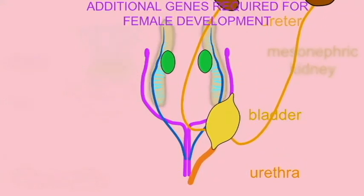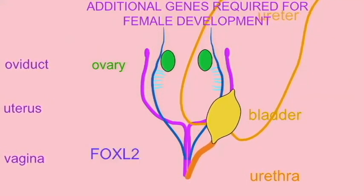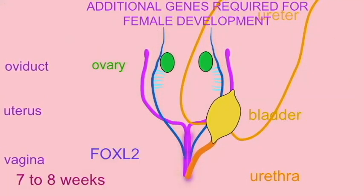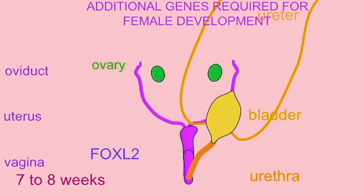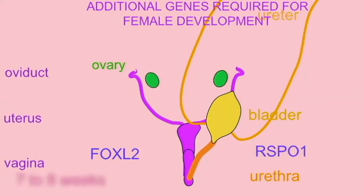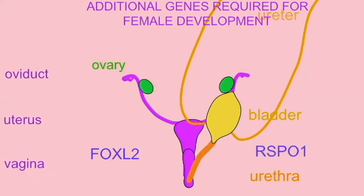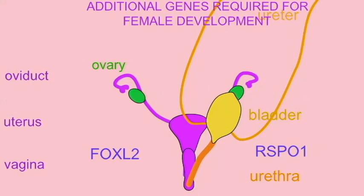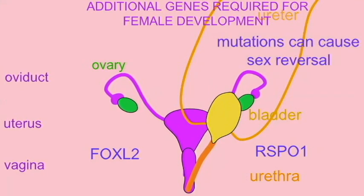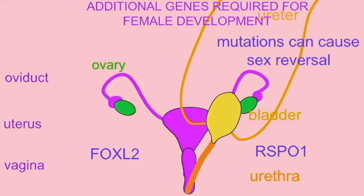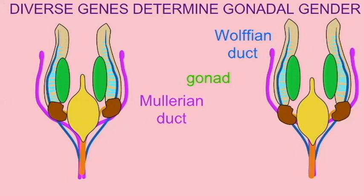There are additional genes required for ovarian fertility, and mutations in genes such as FOXL2 will cause infertility. Mutations in the gene RSPO1, which is required for ovarian fertility, may actually result in sex reversal, where XX individuals will develop as males or as true hermaphrodites, even in the absence of a Y chromosome or an SRY gene.